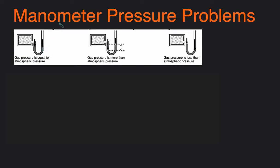Hey guys, this is Michael from Concrete Chemistry. In today's video we'll be looking at how to solve manometer pressure problems. A manometer is an apparatus that allows you to measure the pressure of a gas by comparing it to the pressure of the atmosphere. Here we have a manometer — on the left side you have the gas, and on the right side, the open end, that's the atmosphere.